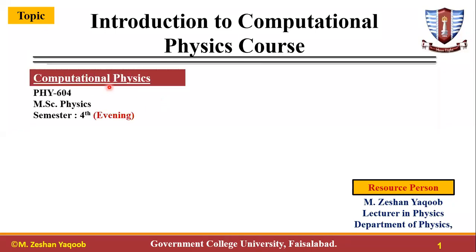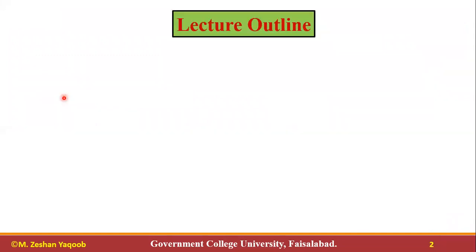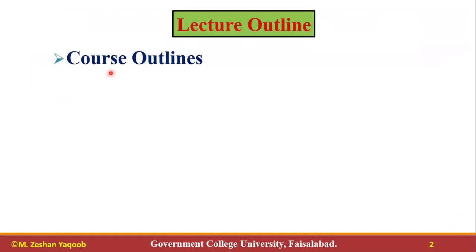This course is designed for MSc Physics, 4th semester evening, PHY604, in the spring semester 2021. The lecture outline will be as follows: first of all, we will discuss about the course outline.